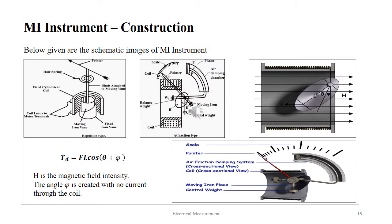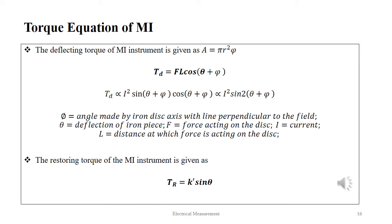The two pictures on the left of this slide represent the repulsion type and the attraction type MI instrument. The deflecting torque in the MI instrument is given by the formula F·L·cos(θ + φ), where the angle φ is created with no current through the coil as shown in the figure on the right. The deflecting torque of the MI instrument is given as A equals π·R²·φ. Therefore, Td equals F·L·cos(θ + φ). Thus, Td is proportional to I²·sin(θ + φ)·cos(θ + φ), which equals proportional to I²·sin(2θ + φ), where φ is the angle made by the iron disc axis with the line perpendicular to the field and θ is the deflection of the iron piece.